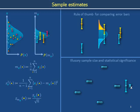We don't always have access to arbitrarily large numbers of samples, so sometimes we need to use a limited number of samples to estimate the properties of the so-called parent distribution. The stuff on the left talks about the standard error. The stuff at the top right talks about a rule of thumb for comparing error bars. The stuff at the bottom right begins the next video module, where we will talk about illusory sample size and illusory statistical significance.